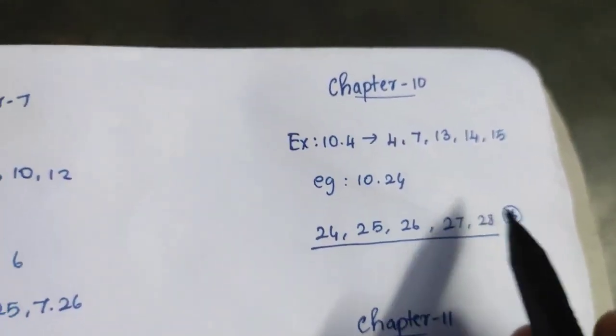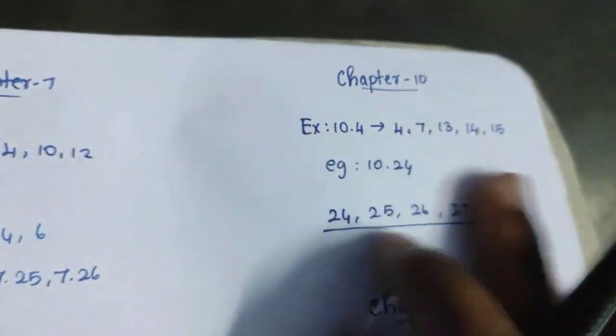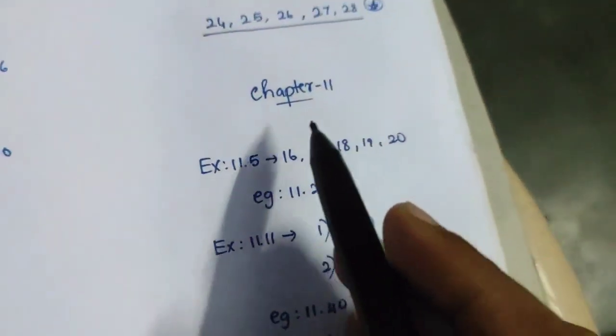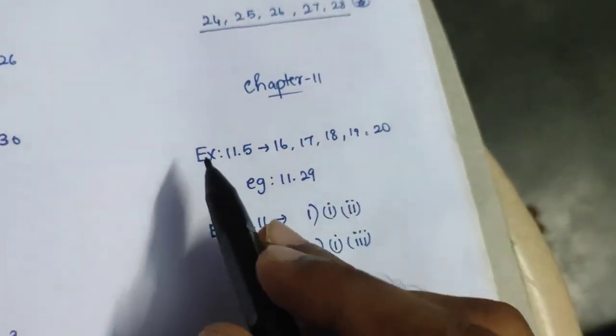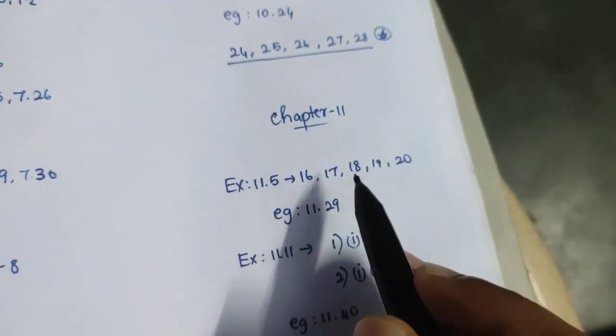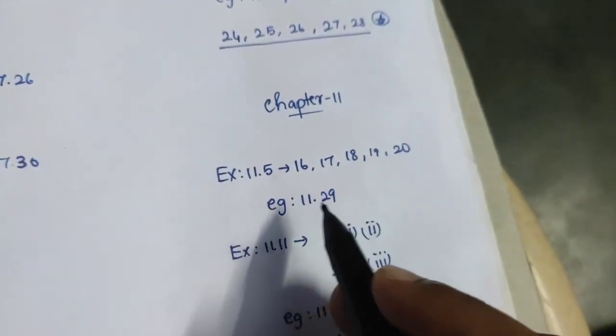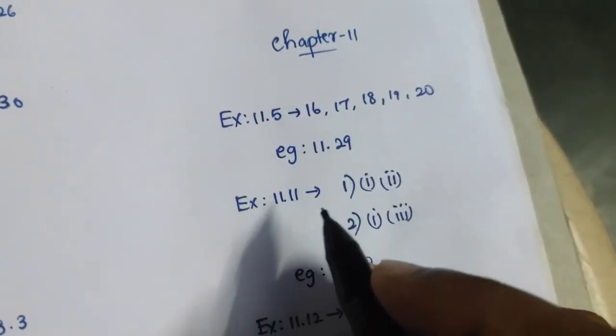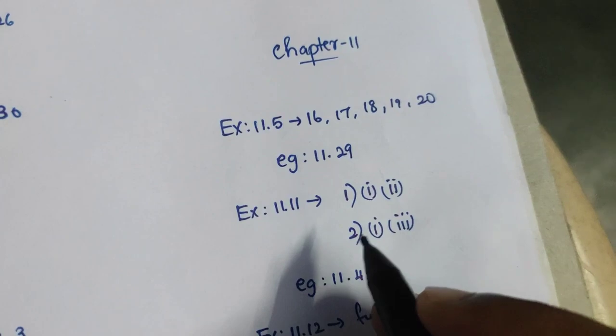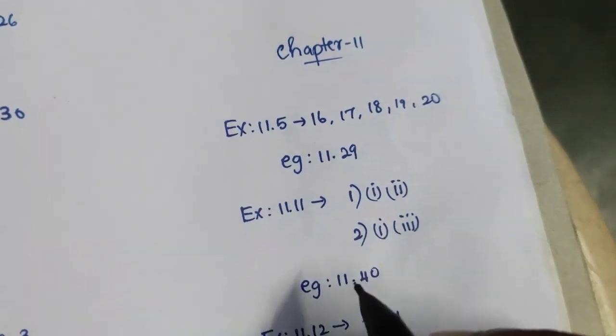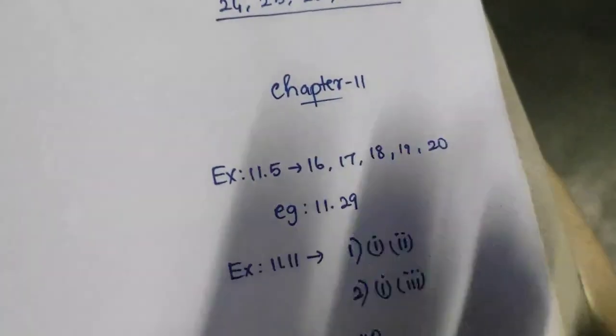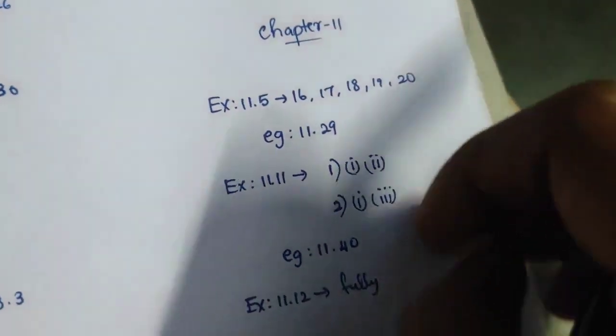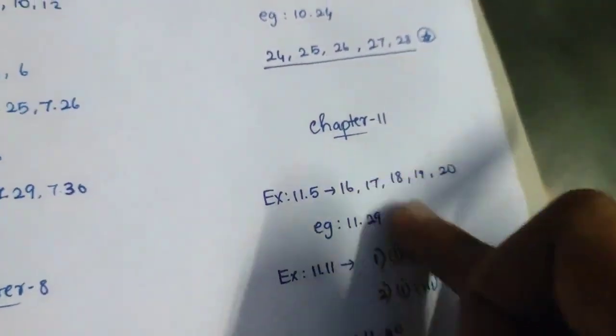Chapter 11. Exercise 11.5, 16, 17, 18, 19, 20. Example 11.29, Example 11.99, Exercise 11.11, 1st, 1st, 2nd, 1st, 3rd. Example 11.40, maximum 11th chapter.